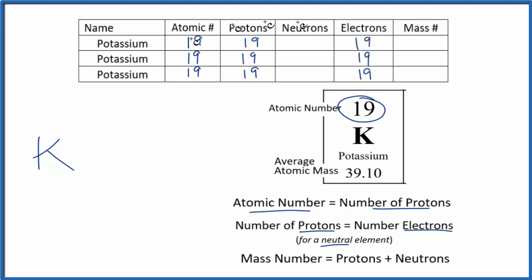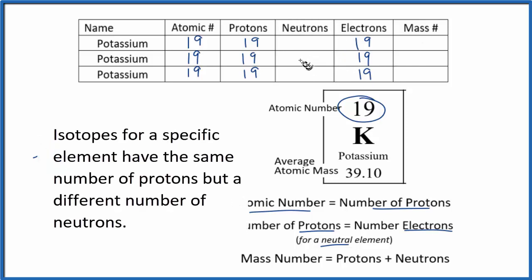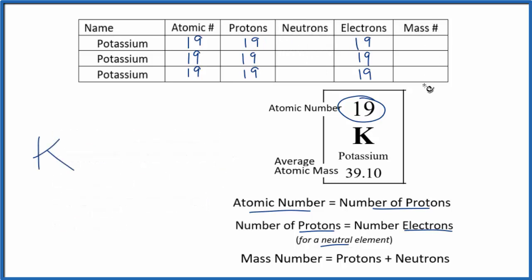So these are the things that are the same for all of the isotopes of potassium. What's different, though, are the number of neutrons. Different isotopes have different numbers of neutrons. And since protons and neutrons, if you add those together, that will give you mass number, different isotopes will have different mass numbers as well.